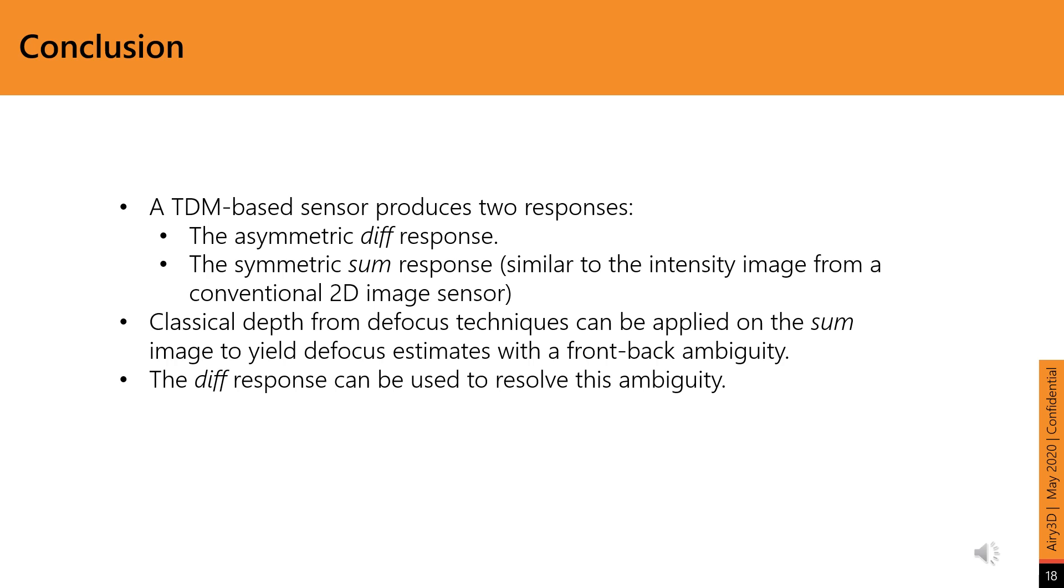In this work, we show how a TDM can change the response of a system from symmetric to asymmetric. We show how we can decouple the asymmetric response introduced by the TDM and the symmetric response of the system as the diff and sum responses respectively. Traditional DFD methods can then be applied to the sum image to produce defocus estimates with a two-fold front-back ambiguity, which can then be resolved using the asymmetric diff response.